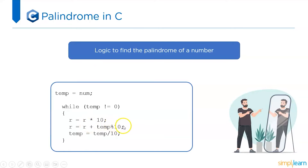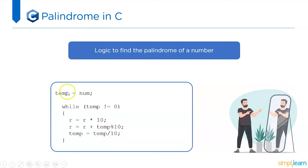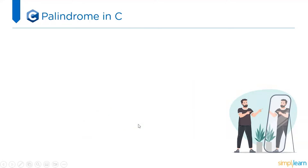Then r is equal to r plus temp modulo 10. Whatever is in temp is moduled by 10, and that result — combined with r — is stored back in r. Then the third statement: temp is equal to temp divided by 10. The number in temp is divided by 10 and that result is stored back in the temp variable.